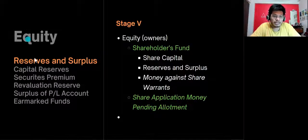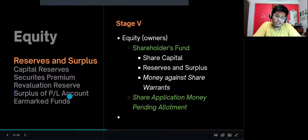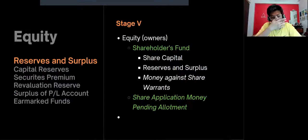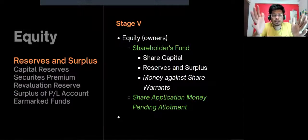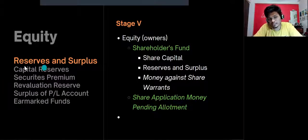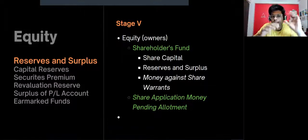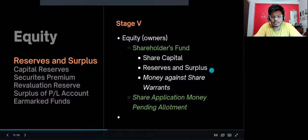Reserves and surplus is the reserve accumulated over the years. It includes capital reserve, securities premium, revolution reserve, surplus from the profit and loss account, and earmarked funds. Every year, if the company earns profit and doesn't distribute it, that money goes into the reserves and surplus for later distribution. I'll create a separate video for reserves and surplus in more detail. That covers the equity part.